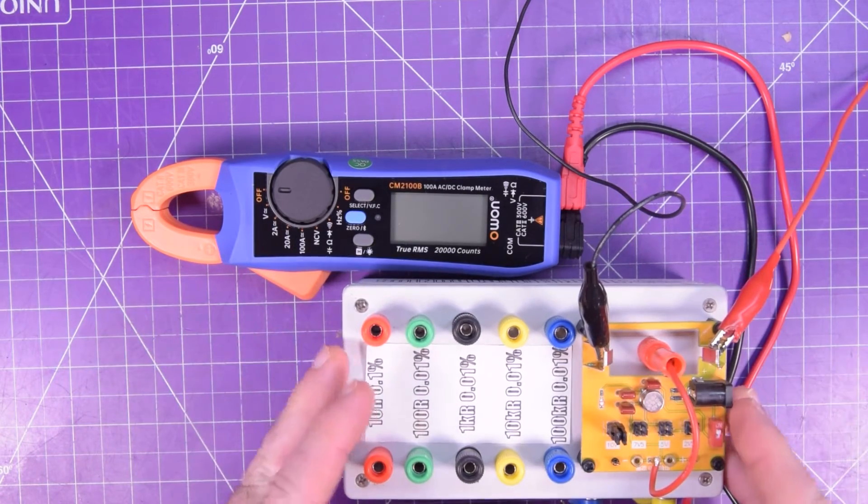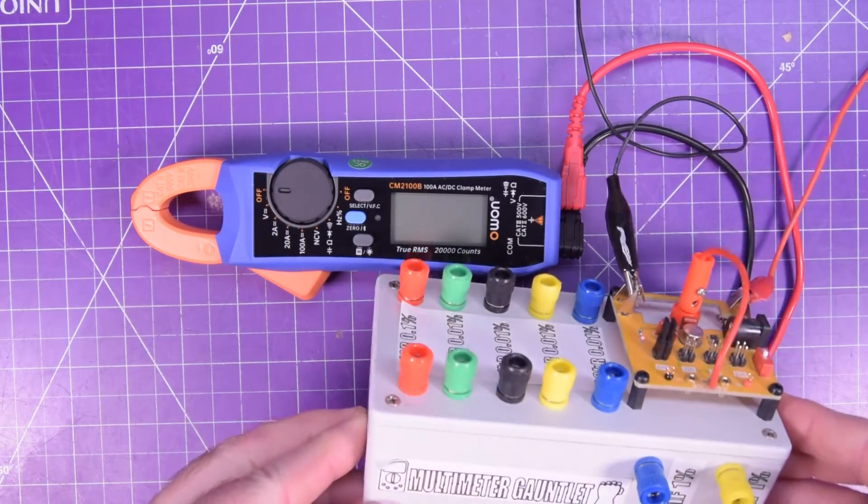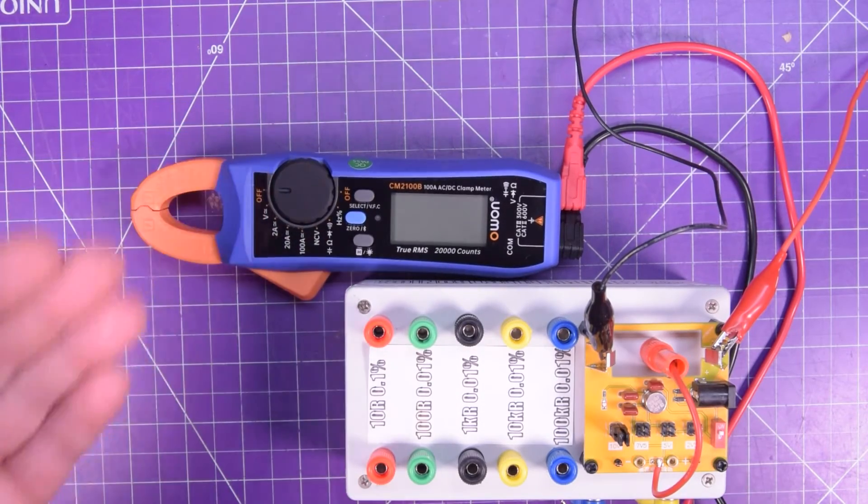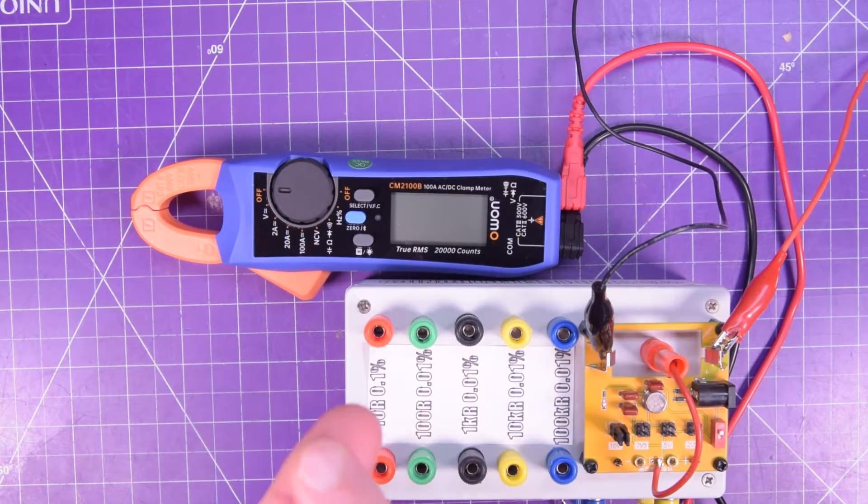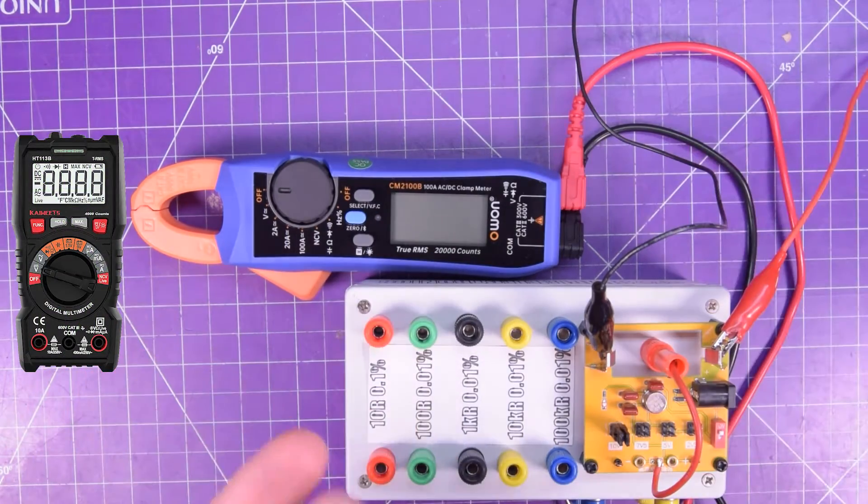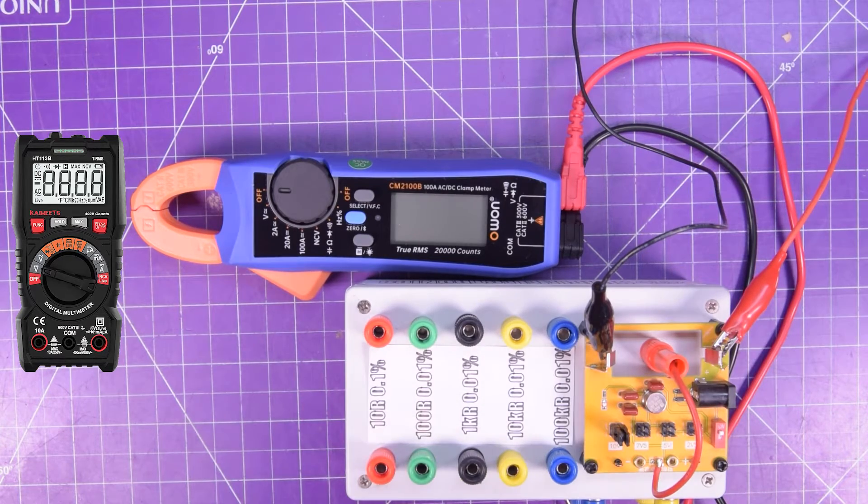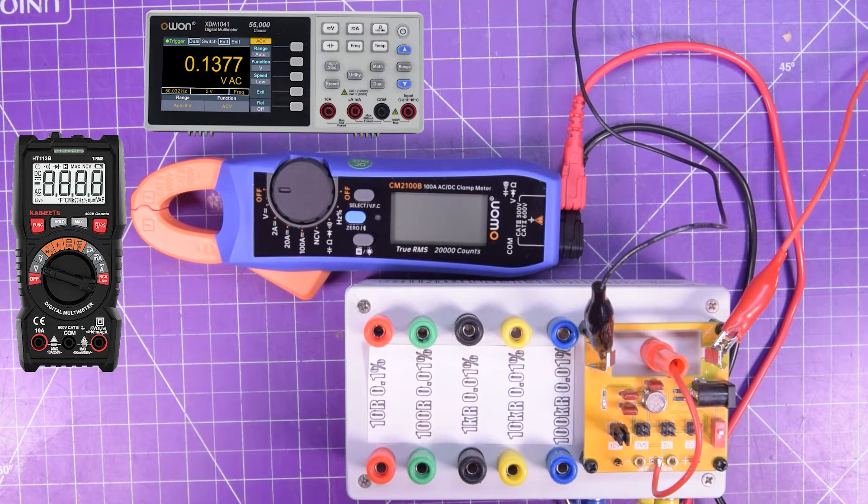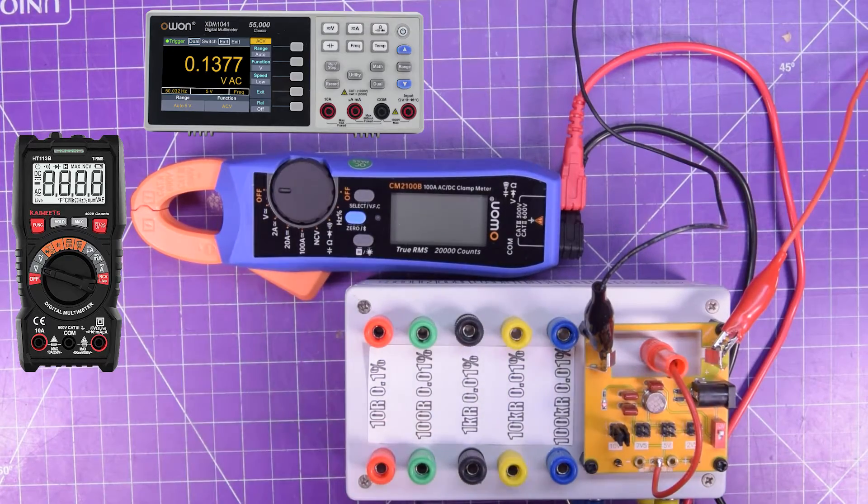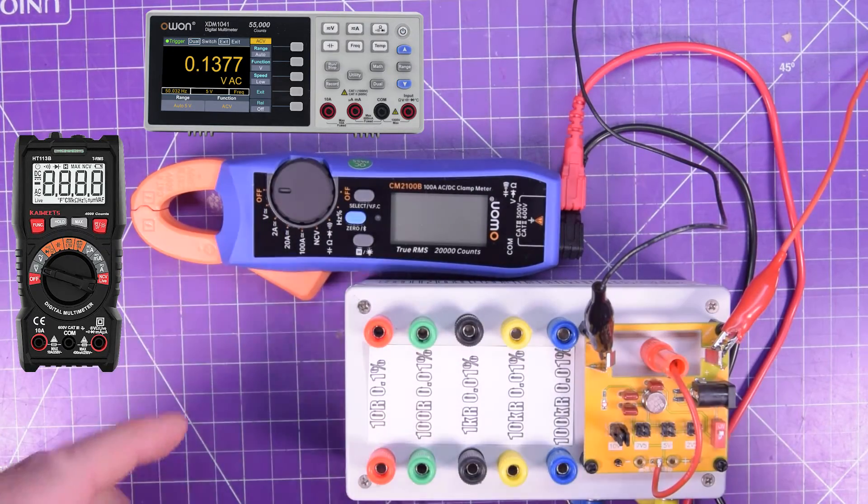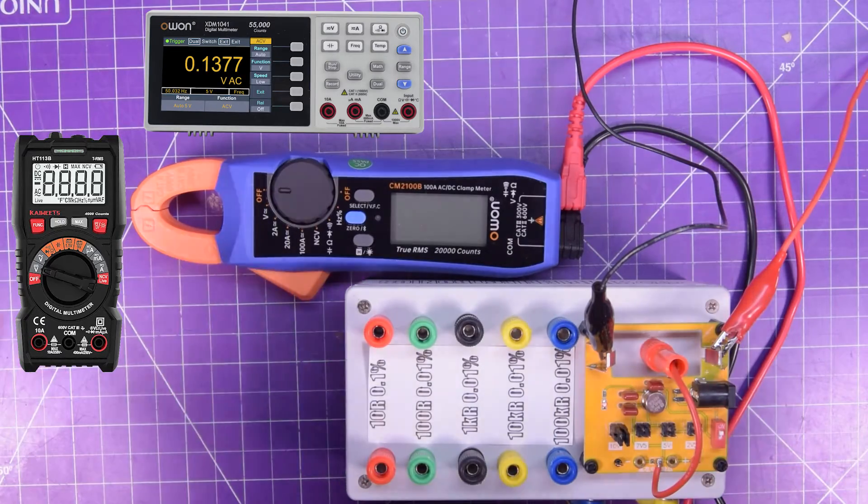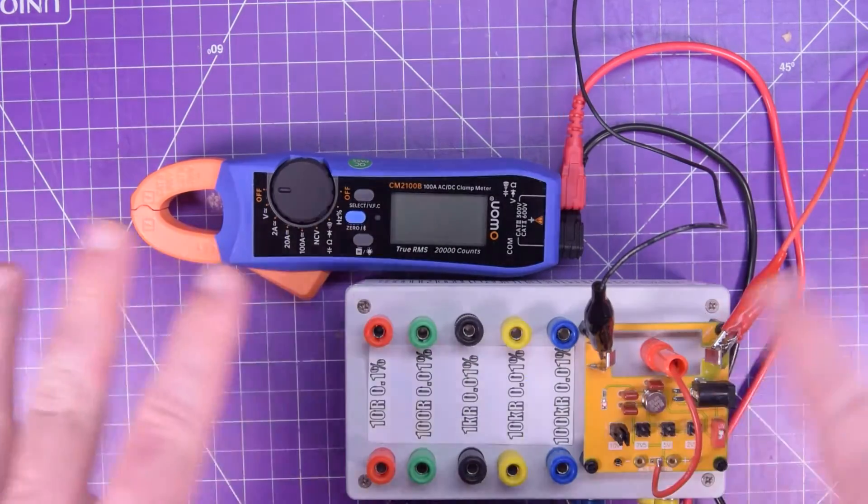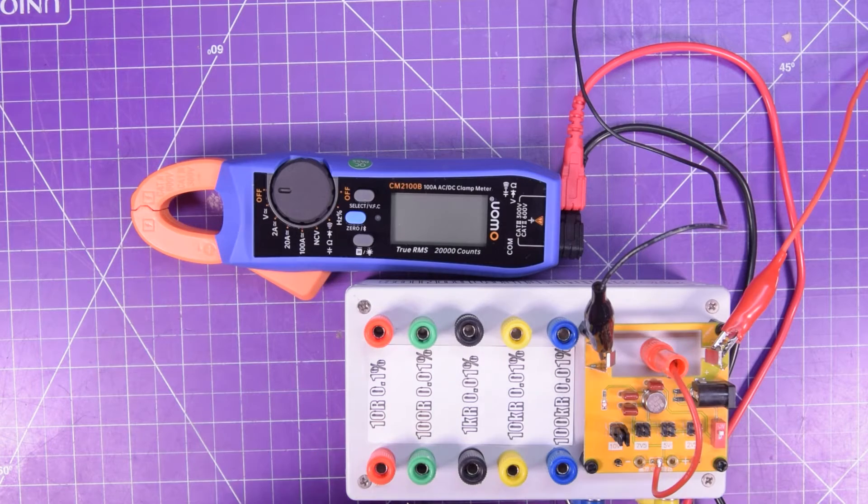All right, got my Kaiweets tester box here. This one was the one that I've built with Kaiweets sponsorship money to test their own multimeters. Now we're going to put this O1 multimeter through the ringer. I went back and I tested with my Kaiweets meter, the HT118A, and also my O1 XDM 1041 benchtop meter. The Kaiweets claims 6,000 counts, the O1 claims 55,000 counts, and this one here claims 20,000 counts. Now there's more to it, but the simple version is, the more counts, the more precision is possible. I know there's more to it, but that's the layman's explanation.